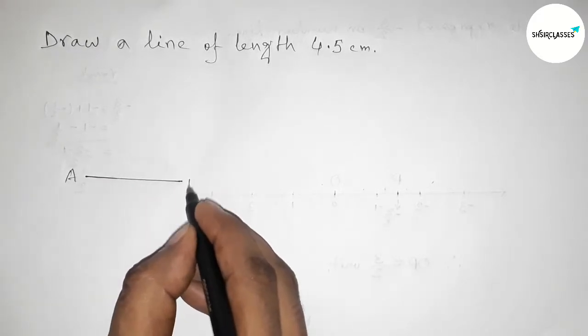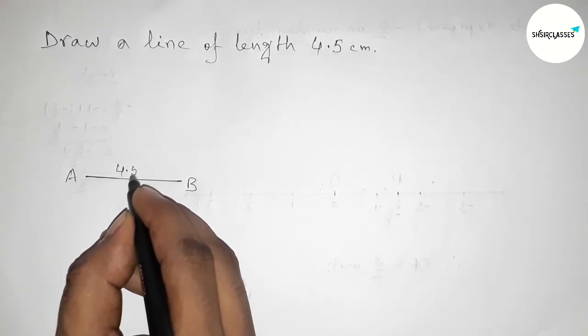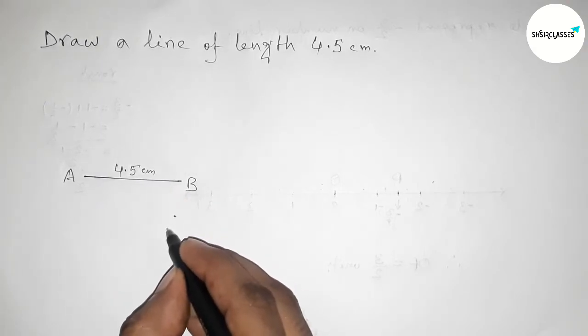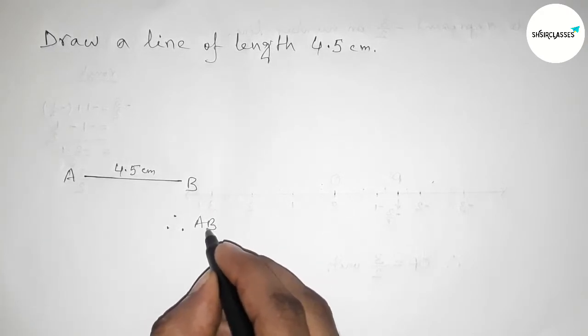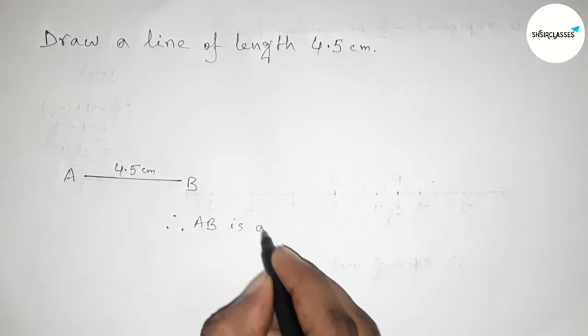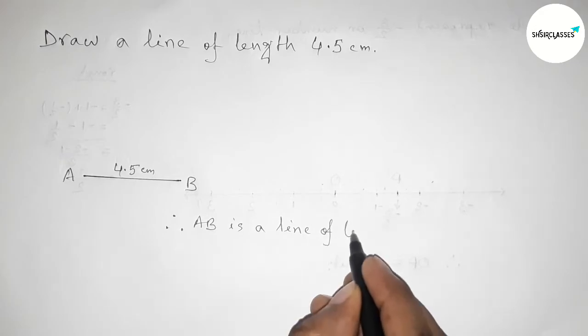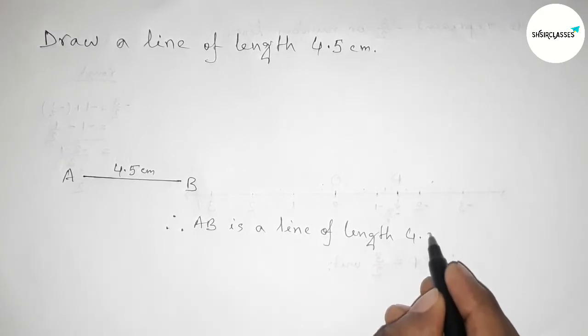Mark point A here and point B here. So AB is a line of length 4.5 centimeters. This is how you can draw a line of length 4.5 centimeters.